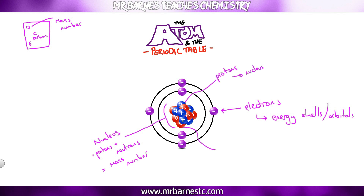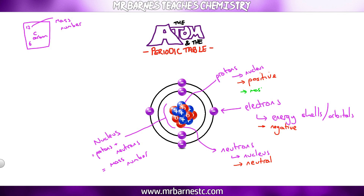We know the nucleus has protons and neutrons. What we now need to know is the charge: all protons are positive, all electrons are negative, and all neutrons are neutral. For mass, protons and neutrons make up the mass number, so they are the ones with mass. Protons have a mass of 1. Electrons have no mass — we can say 1/1835 if you want to be specific, or just 0. Neutrons also have a mass of 1.